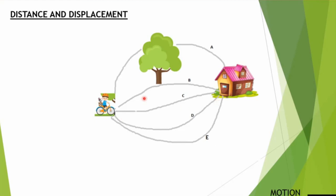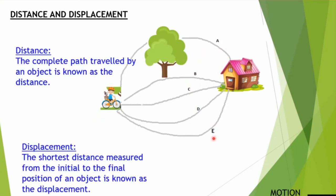This shortest path that connects the initial position to the final position is the displacement, and paths A, B, C, D, and E will give us the distance. Since he can travel through different ways from his initial to the final position, all of these will individually give us the distance. Hence, distance is the complete path traveled by an object, and displacement is the shortest distance measured from the initial to the final position of an object, which is C here.